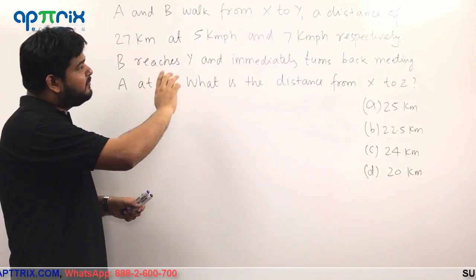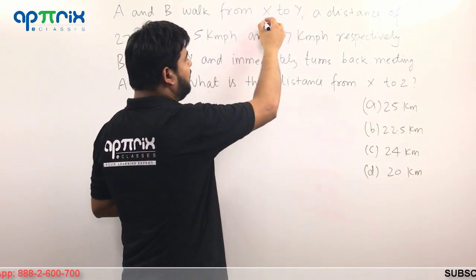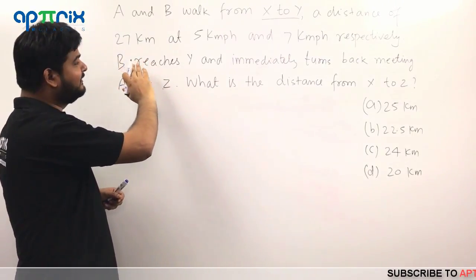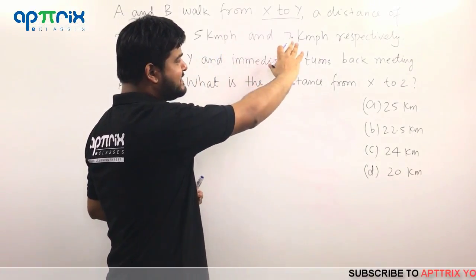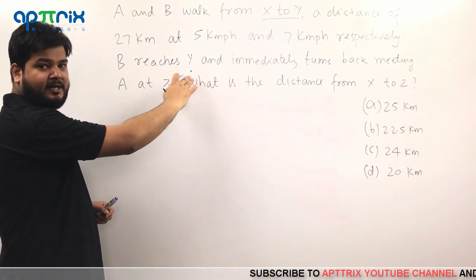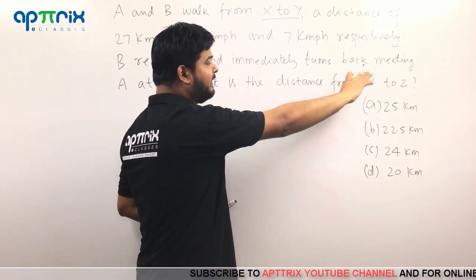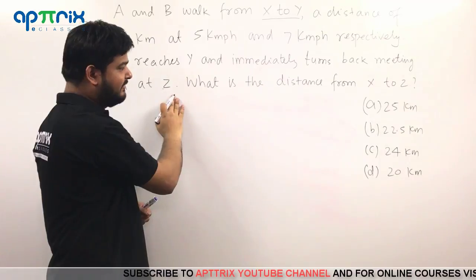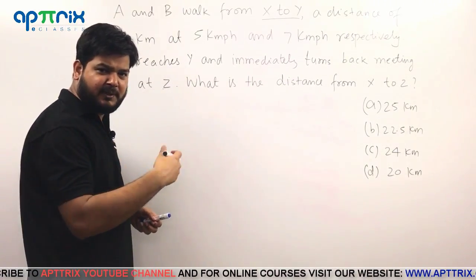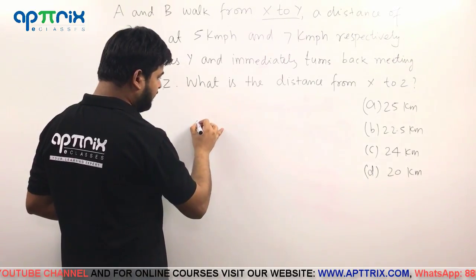So let's read the question. This says A and B walk from X to Y, a distance of 27 km, at 5 km per hour and 7 km per hour respectively. And it says B reaches Y and immediately turns back meeting A at Z. What is the distance from X to Z? So the situation is very simple. Let me explain you with the help of diagram that it will be more clear to you.